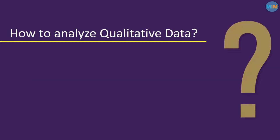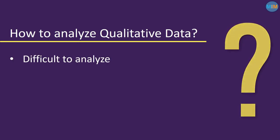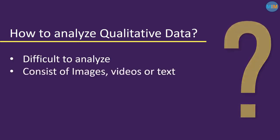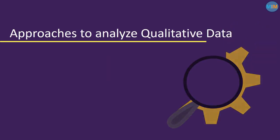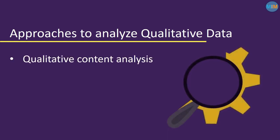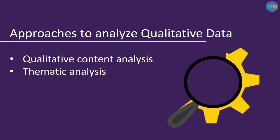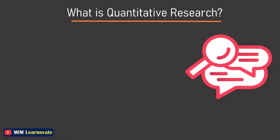How to analyze qualitative data? Qualitative data is more difficult to analyze than quantitative data. It consists of text, images, or videos instead of numbers. Some common approaches include qualitative content analysis, which is used to track the occurrence, position, and meaning of words or phrases. Thematic analysis is used to examine the data to identify the main themes and patterns. Discourse analysis is used to study how communication works in social contexts.